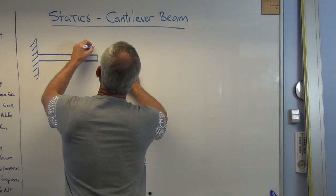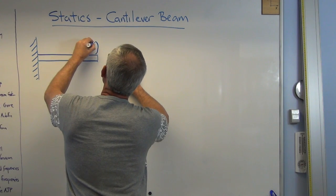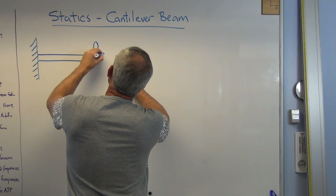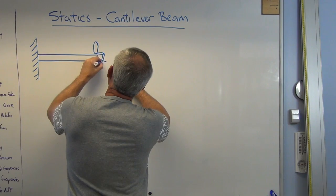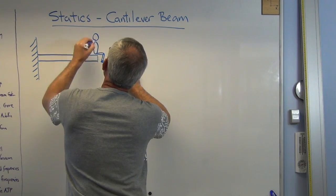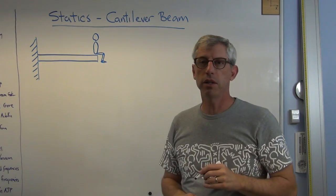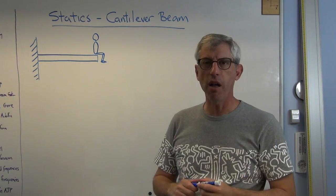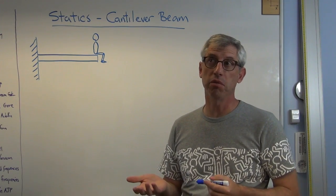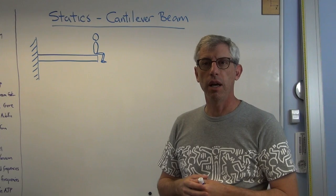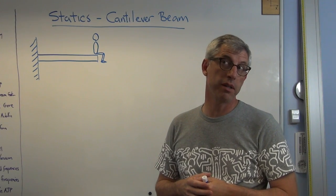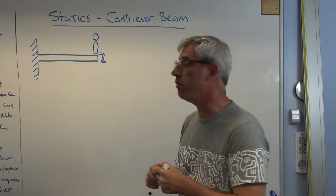It has to have a weight on it, or else it's not very interesting. So let's say sitting on the end of this cantilevered beam is a college professor in perhaps late middle age, and let's say that college professor weighs maybe 900 newtons.